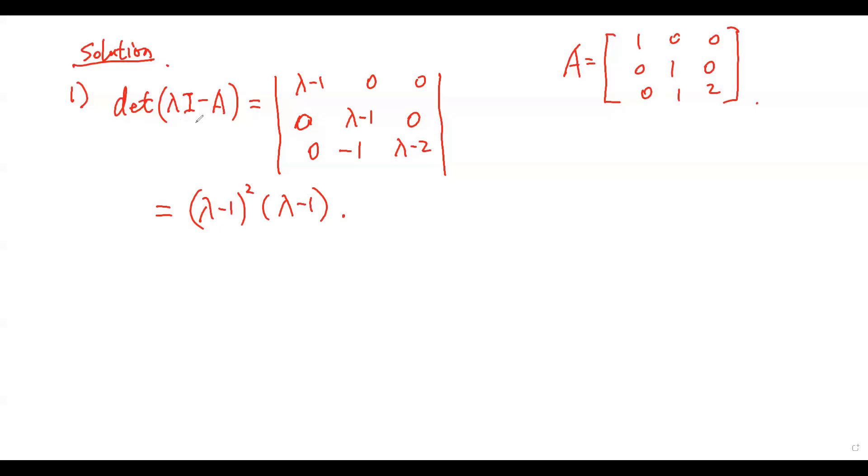Question 1. The determinant of lambda I minus A equals this one. This gives the eigenvalues lambda equals 1 or 2.